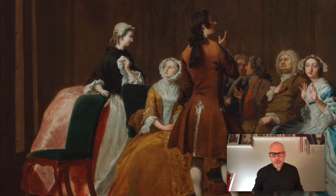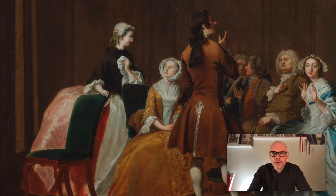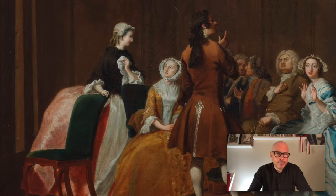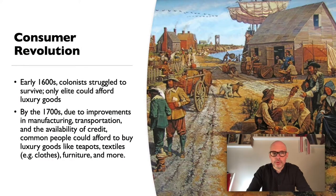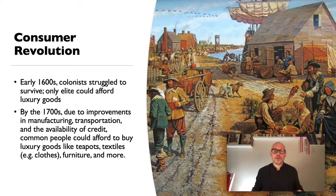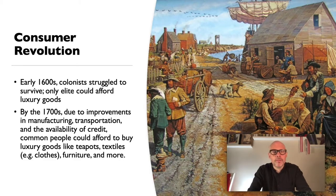In colonial British America, at first only rich people could afford luxury goods — a nice dress, drapes, a teapot. In the early 1600s, if you wanted a chair, you had to make it. If you wanted food, you had to grow it. But this brings us to the consumer revolution. By the 1700s, common people — not just the rich — could purchase things. They could buy a chair instead of making one.